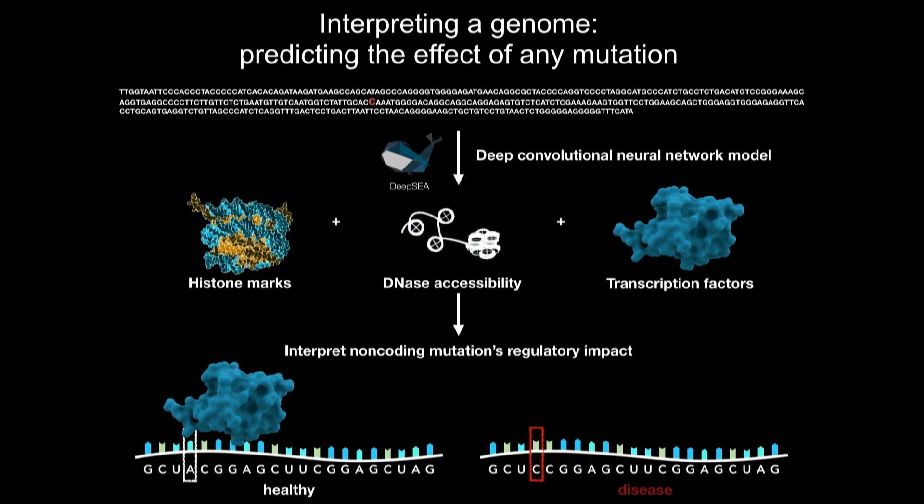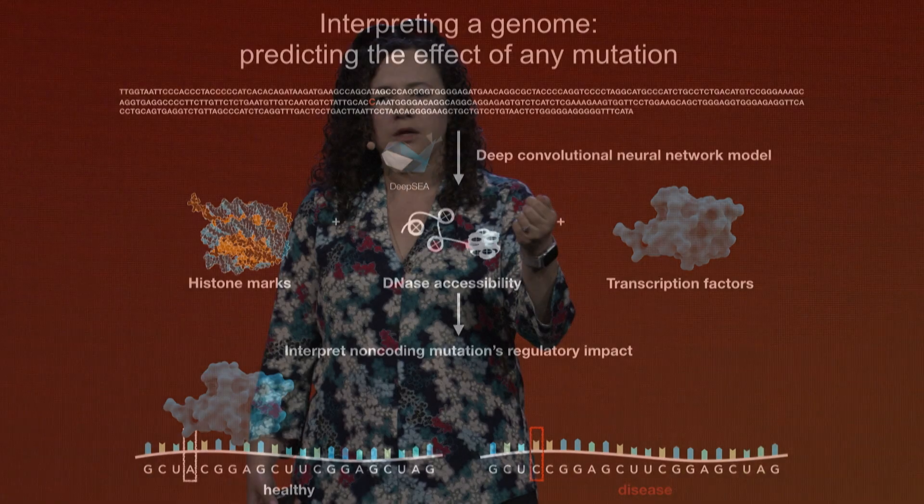For example, in a healthy individual an A at that position means that a special protein called a transcription factor will bind the DNA and signal it to turn on a specific gene — say, a neuronal developmental protein that's really important for early neural development. Whereas in an individual with a disease, that single letter change to a C means the transcription factor can no longer bind, so that protein won't be turned on when it needs to be in early development, potentially predisposing that child to autism.